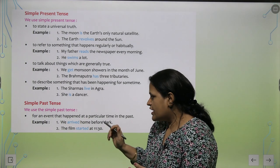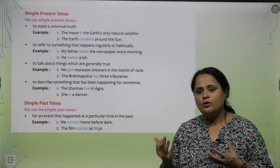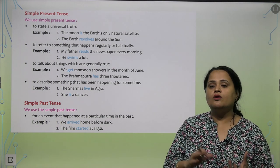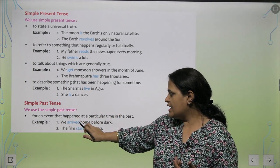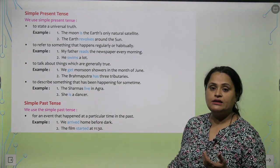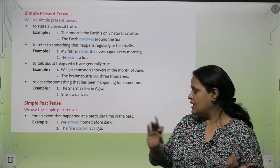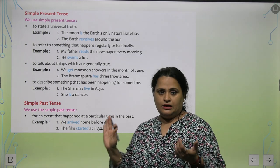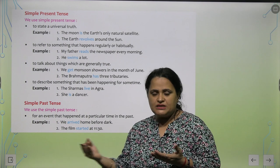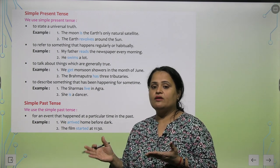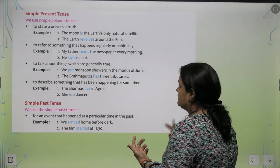Simple past tense. For an event that happened at a particular time in the past — jab past mein kuch particular time ke liye kuch hua ho, voh kab aayega? Past mein hua hai, toh usse hum banayenge simple past tense mein. Jaise, 'We arrived home before dark.' Andhera hone se pehle hum ghar pahunch gaye. 'The film started at 11:30.' Start kab hui? 11:30. Toh aap 12 baje ya 11:45 pe yeh bol sakte ho — that film started — kyunki voh ho chuki hai. It will come in past.